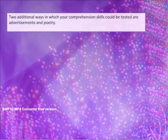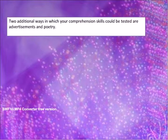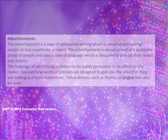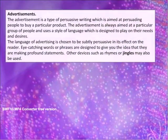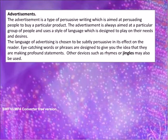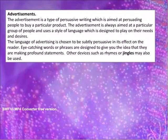Two additional ways in which your comprehension skills could be tested are advertisements and poetry. The advertisement is a type of persuasive writing which is aimed at persuading people to buy a particular product. The advertisement is always aimed at a particular group of people and uses a style of language which is designed to play on their needs and desires.